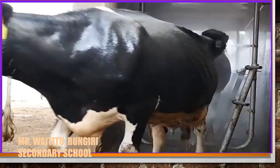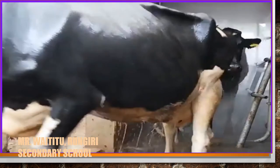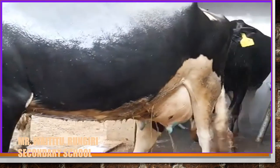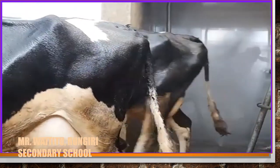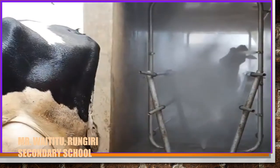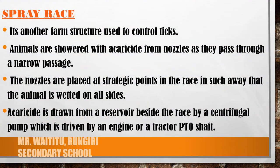Let's watch a video here and then you can tell me what activity that is. It is a spray race — another farm structure used in the control of ticks, where animals are showered with an acaricide from nozzles as they pass through a narrow passage.